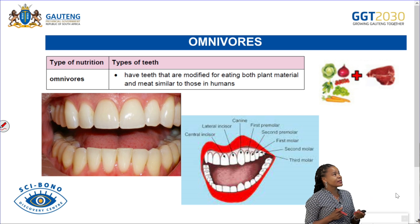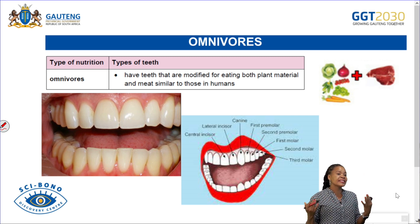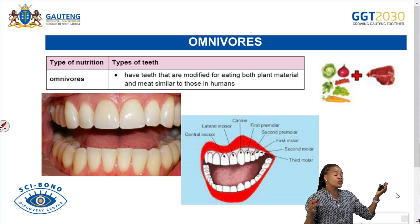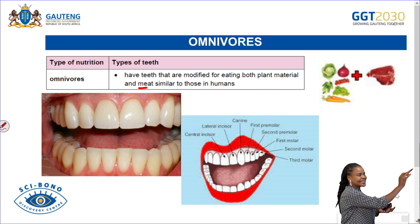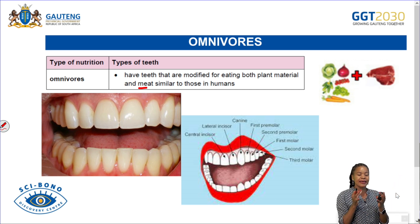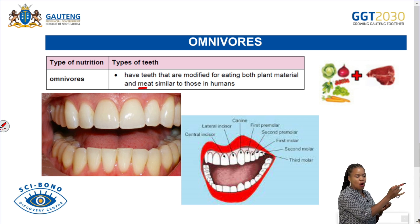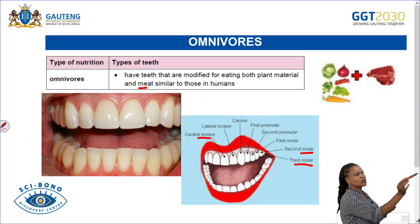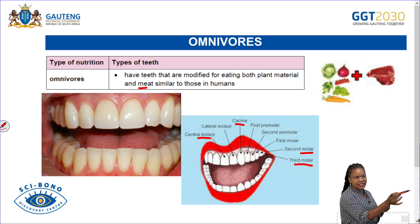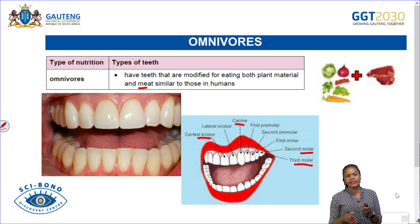The last organism type is omnivores. Even human beings are good examples of omnivores — organisms that feed on both plants and meat. Omnivores have all different types of teeth: premolars, molars, incisors, and canines — so they can eat both plant and animal material.